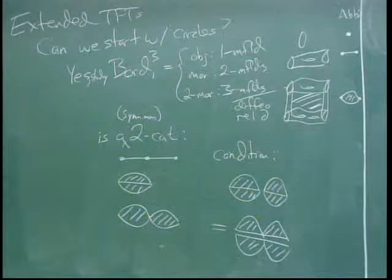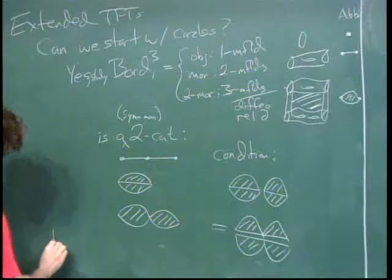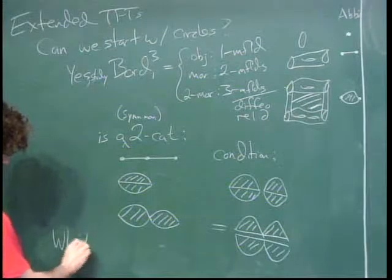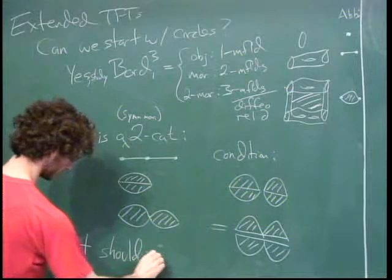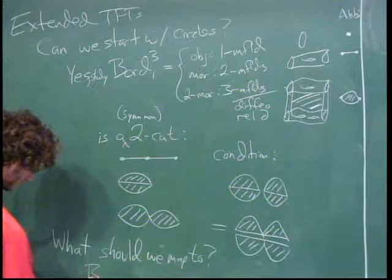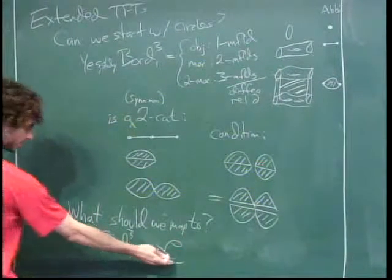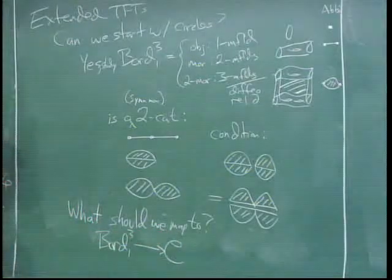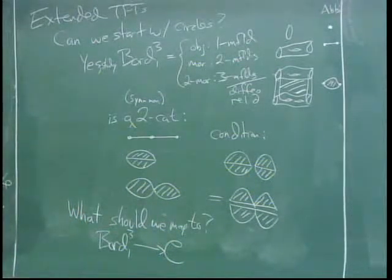So this is the geometry we want to start with. The question is: what should the algebra be — what should we map to? We want some functor out of this geometric bordism category into some kind of target. That target should be some kind of symmetric monoidal 2-category built out of algebra, because we want some kind of algebraic invariants of our manifolds.